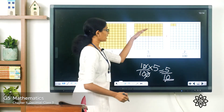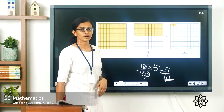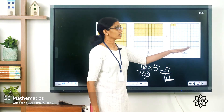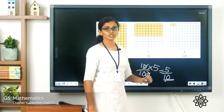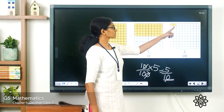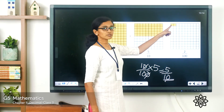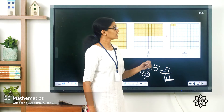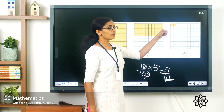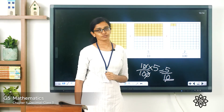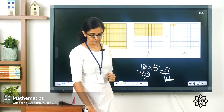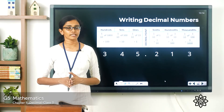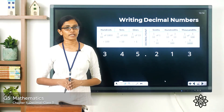So here we have represented 5 by 10 and 2 by 100. To represent 2 by 100, how many boxes do you color? Two boxes — one box means 1 by 100, two boxes mean 2 by 100. Hope this is clear to you. Now we have seen how to represent decimal numbers pictorially.